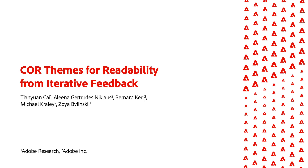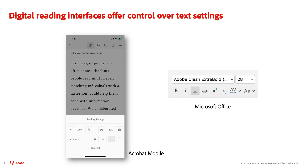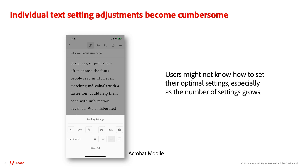In this work, we aim to develop effective reading themes through human-machine learning collaboration. As you know, individuals have different reading needs based on their age, vision, reading environment, learning disabilities, and so on. Digital reading interfaces often give readers the ability to customize their text settings, but they can be overwhelming and difficult to use because there are so many options and limited guidelines.